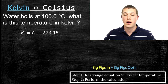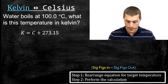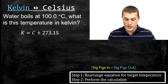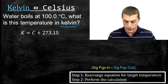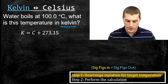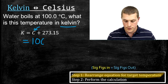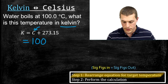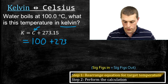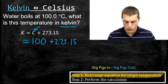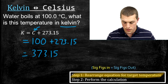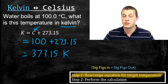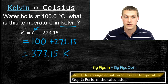Our question: water boils at 100 degrees Celsius — what is this temperature in Kelvin? The target temperature is Kelvin, and our equation is already solved for K, so step one is done. We plug in 100 degrees Celsius for C: K equals 100 plus 273.15, which gives us 373.15 K. Note that Kelvin is the only temperature scale where we don't use a degree sign.